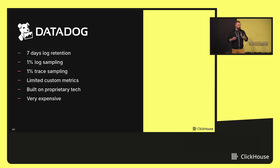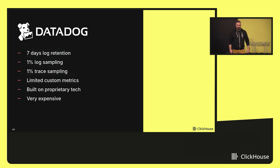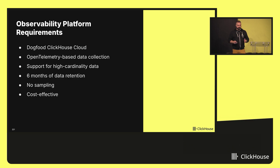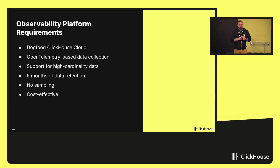We had seven days of log retention. We were sampling logs very heavily for everything that wasn't a fatal error. We were sampling traces, and we were imposing very serious limits on the number of custom metrics we were emitting to Datadog — and all of that was very expensive. So after running the numbers on cost and collecting requirements from engineering teams, it was clear the way to go was to build our own system.